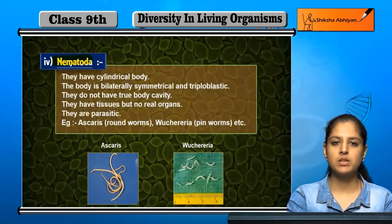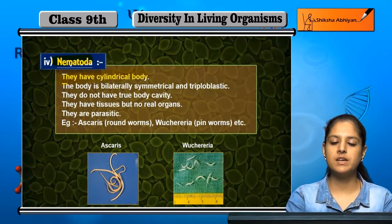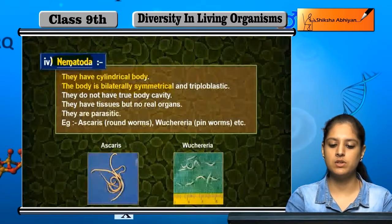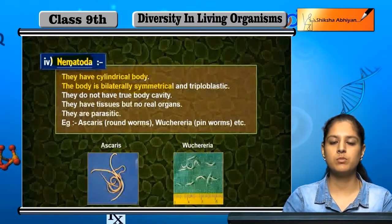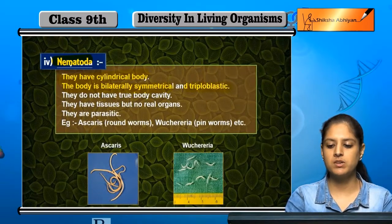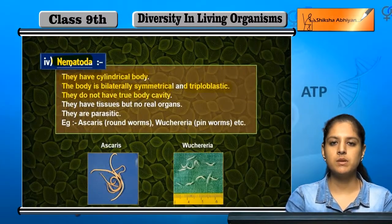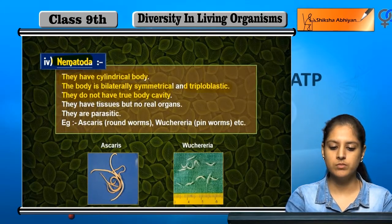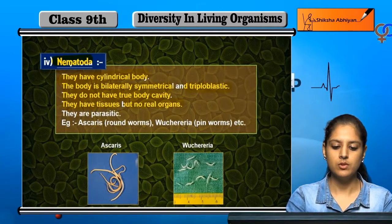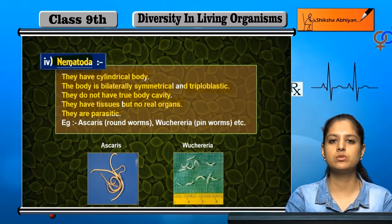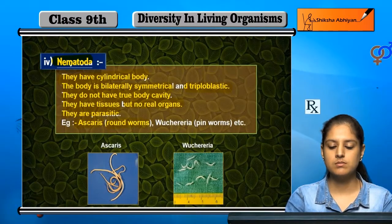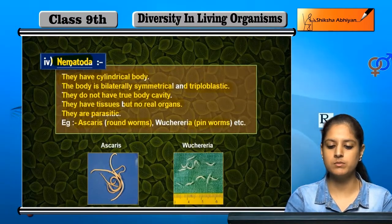Next is Nematoda. They have a cylindrical body and are bilaterally symmetrical. They are also called triploblastic and do not have a true body cavity. They have tissues but no organs. They are parasitic and dependent on others for food. Examples are Ascaris, roundworms, and pinworms.